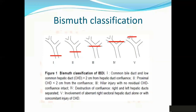To summarize Bismuth: Type 1 is at the common hepatic duct more than 2 centimeters from the hilum. Type 2 is less than 2 centimeters. Type 3 is at the level of the hilum, but the connection between the right and left is preserved. Type 4 is above the level of the hilum and the right and left systems are completely separated. Type 5 is when there is a right posterior sectoral duct injury, either alone or with a common hepatic duct injury.